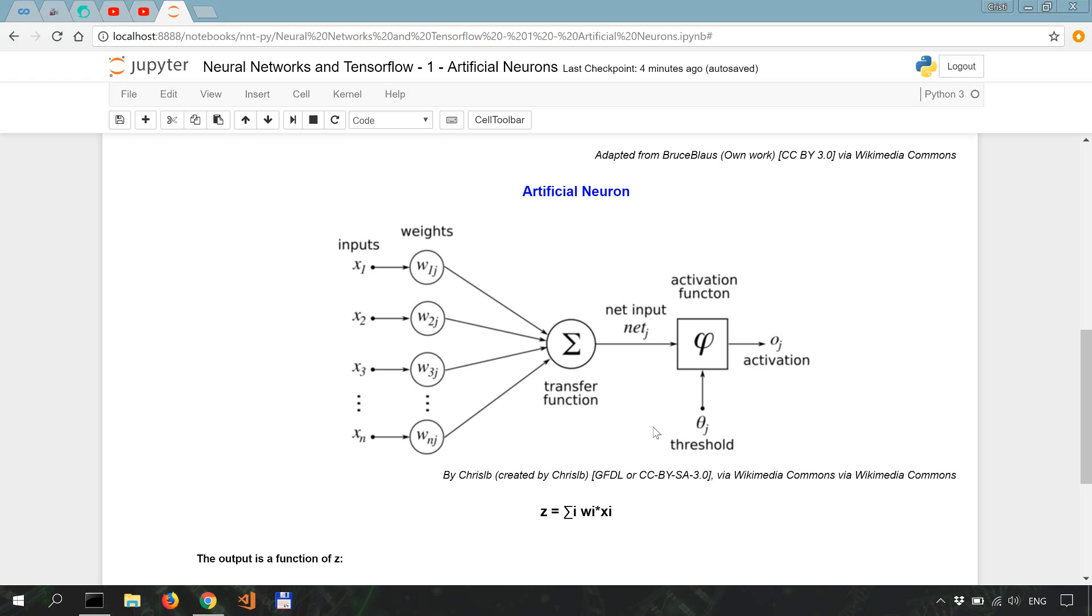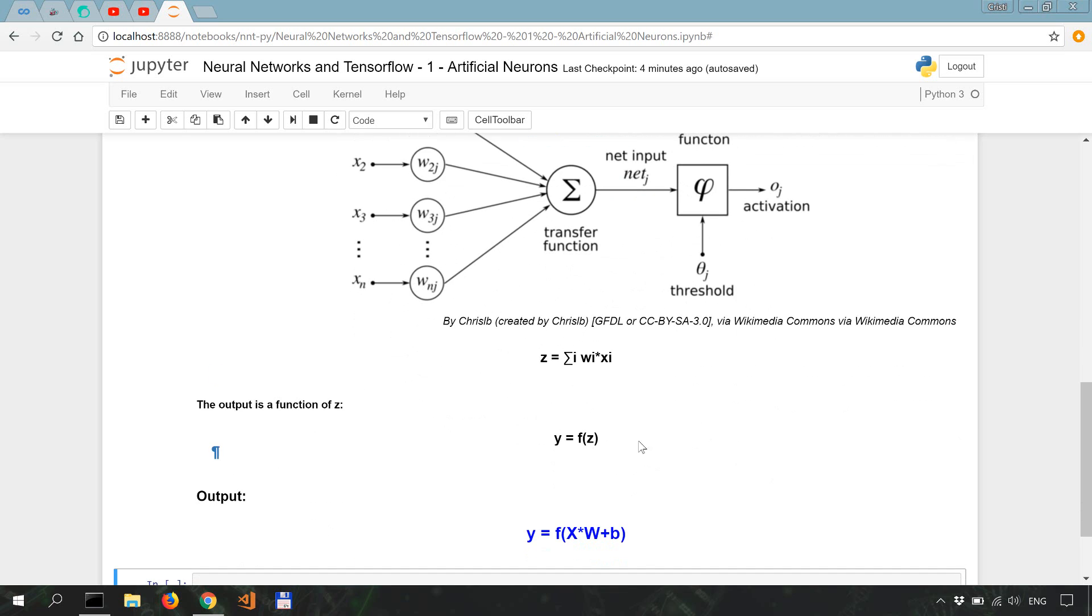This logit also includes a constant called the bias, which is very much needed in the learning process. So we are at the logit, we pass it through a function, and then we get the output. So in other words, our output is a function of Z. Simply said, Y is actually a function of Z.